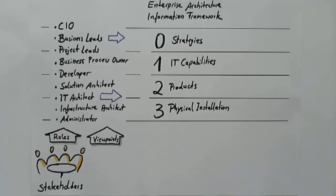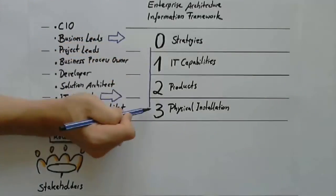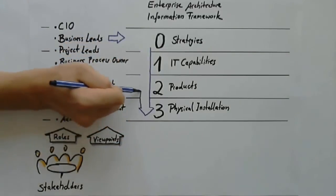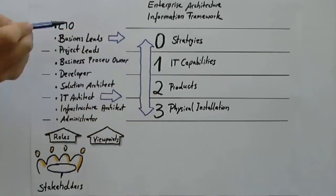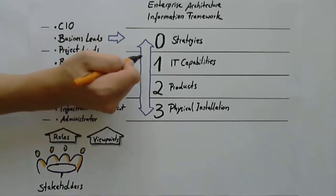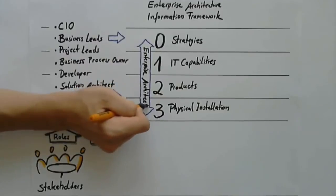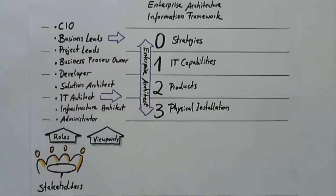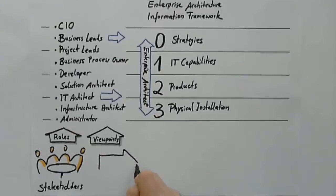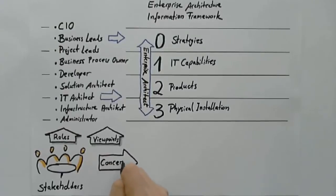Finally, there is another role which is of particular interest here as we are talking about enterprise architecture. The enterprise architect has a strong vertical focus on the information framework. This architect might not be interested in all the details in one level, but in how the pieces in these levels are related to each other. You can imagine that all these roles have their very own concerns.